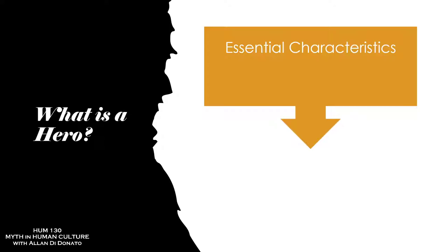Accidental characteristics would be things like skin color or hair color — things that could differ from one person to another. They don't make you human; they're individuating features. If you don't have blonde hair, it doesn't mean you're not human. That's what we mean by accidental. So now I'm going to give you the essential characteristics of what a hero is.